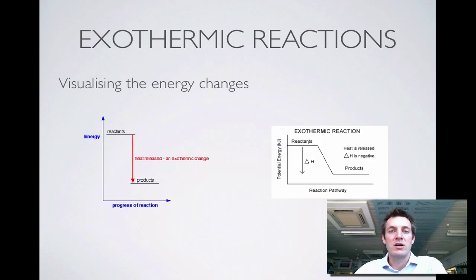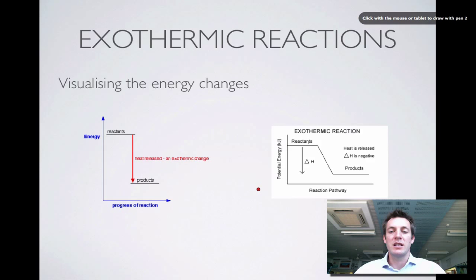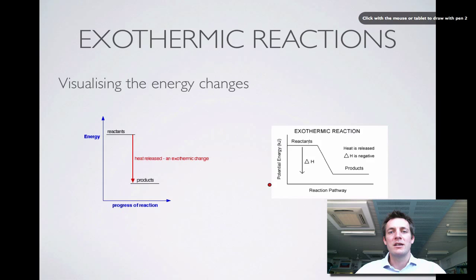To visualize those energy changes, we often use something called an energy level diagram — some people call them enthalpy level diagrams. In this particular diagram, this axis is labeled as potential energy, though more precisely we ought to say it's the enthalpy of the system. On these energy level diagrams, the x-axis represents the beginning and end of the reaction — the reaction pathway. It's basically a start and finish of the reaction, not quite the same as a simple time axis.